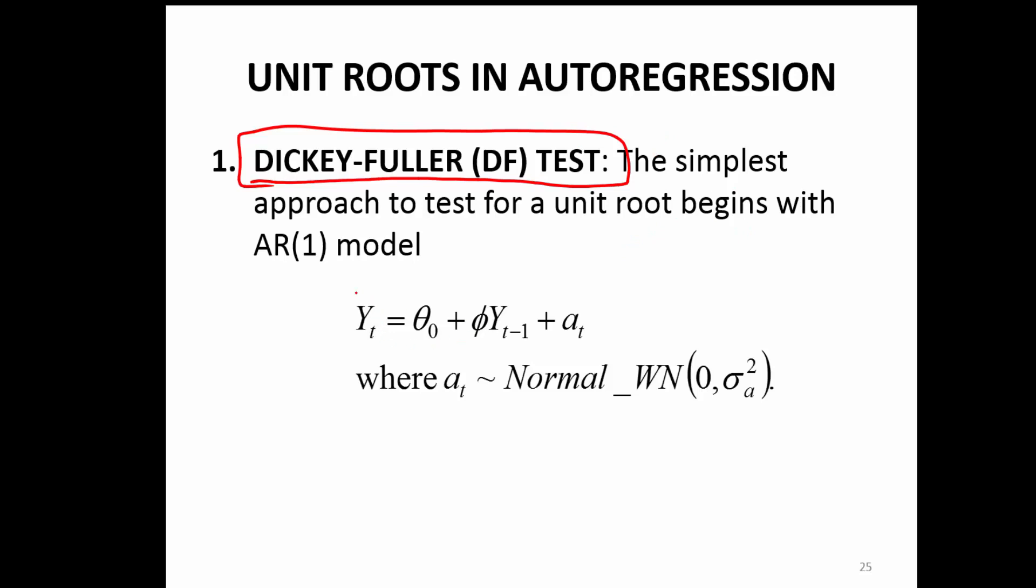The simplest approach is just to have an AR(1) series, y_t with theta and we have phi of y_t minus 1, and we would like to know if phi is 1 or not. This is an AR(1) series, and we expect phi to be less than 1. If it is equal to 1, then that's a problem, that's a random walk series.